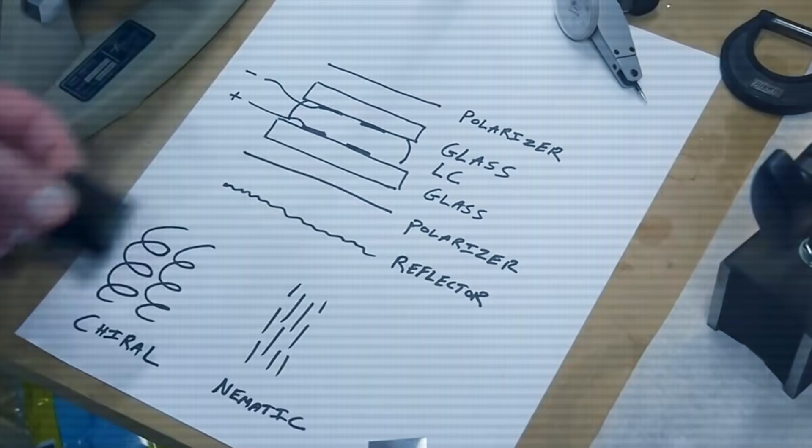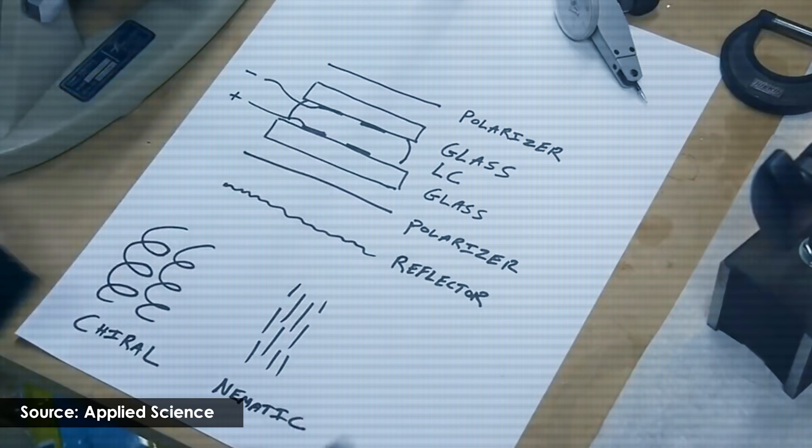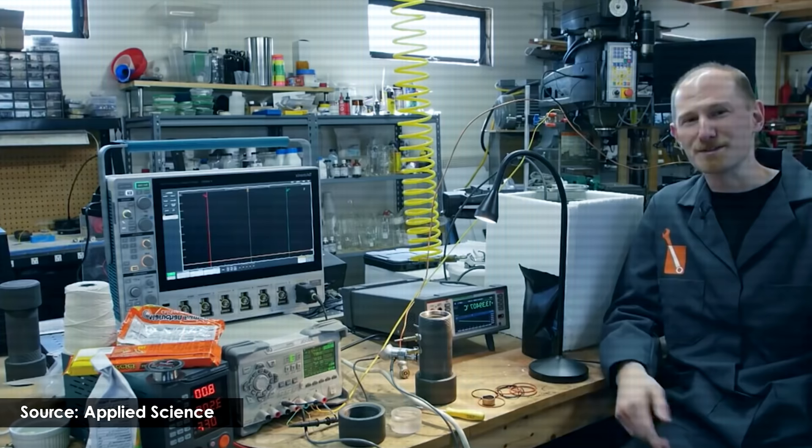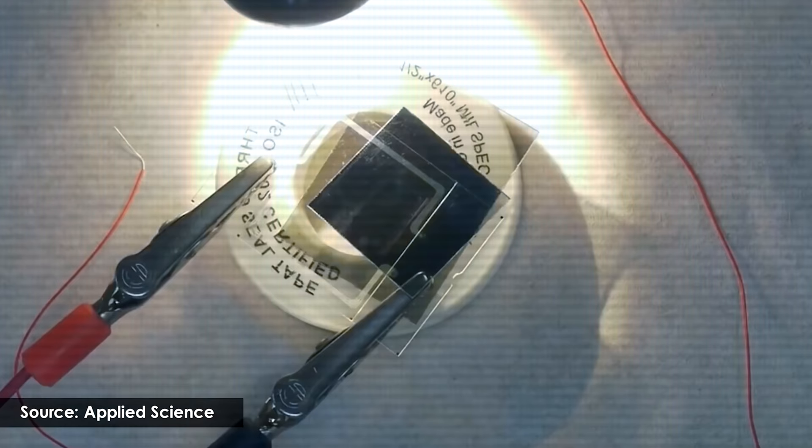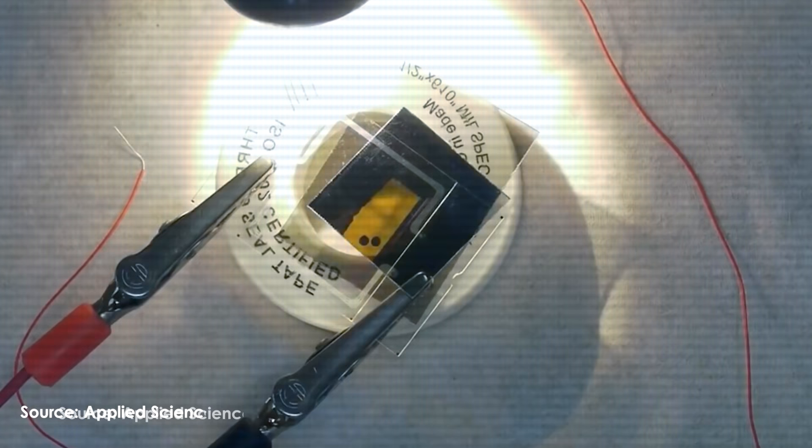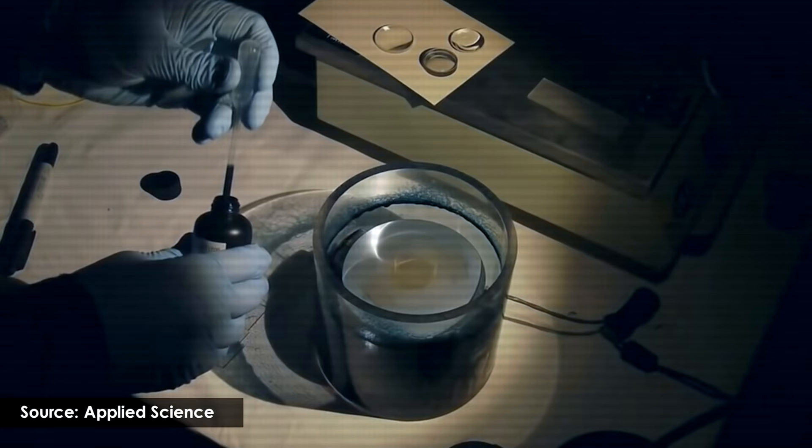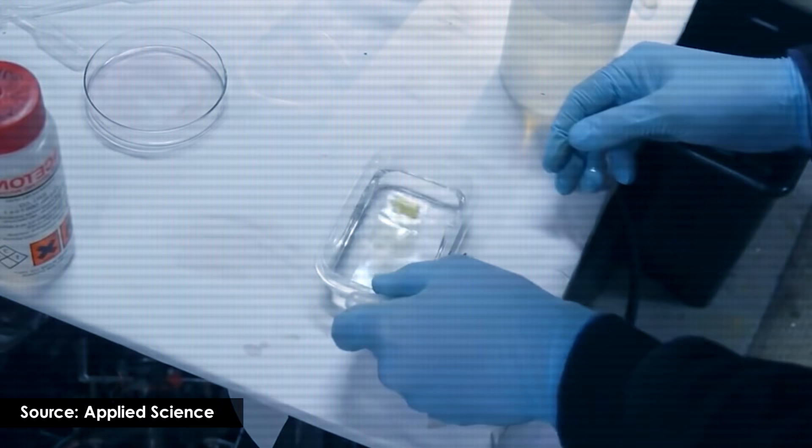I came up with an idea to try to make a do-it-yourself LCD pixel after watching this 7-year-old video from the Applied Science channel. This channel's creator, whose name is Ben, assembles unique setups, including making DIY liquid crystal displays. That is why I decided to repeat this experiment. In one of the videos on this channel, there was a short description of how to make such a pixel. That is why, basically, I decided to do the same.